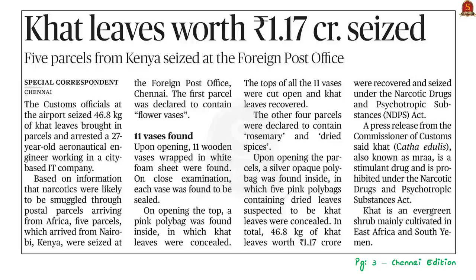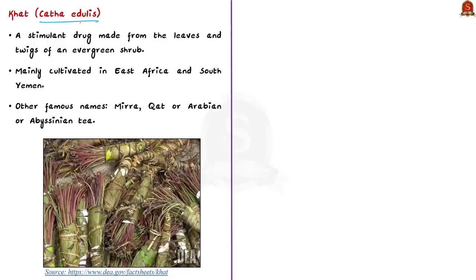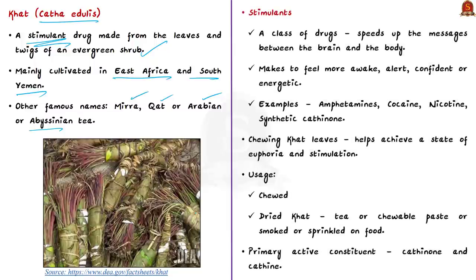The next discussion concerns customs officials at Chennai airport who seized cut leaves worth more than one crore rupees under the Narcotic Drugs and Psychotropic Substances (NDPS) Act of 1985. Cut leaves, scientifically known as Catha edulis, is a stimulant drug made from the leaves and twigs of an evergreen shrub mainly cultivated in East Africa and South Yemen. It is also known as miraa, khat, or Arabian tea and Abyssinian tea. Stimulants are a class of drugs that speed up messages between the brain and the body, making a person feel more awake, alert, confident, or energetic.